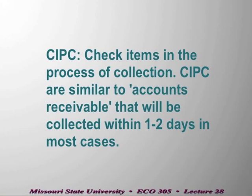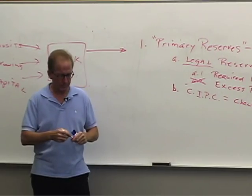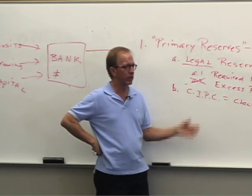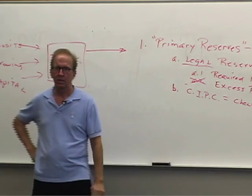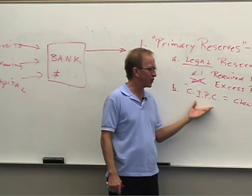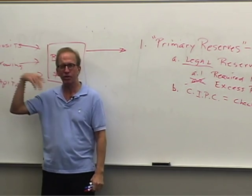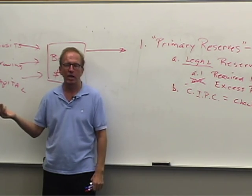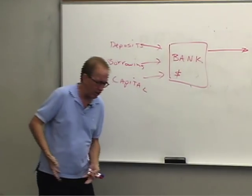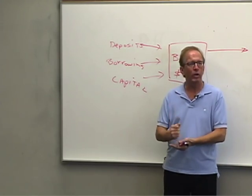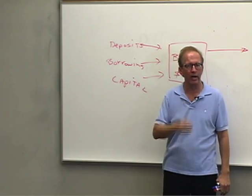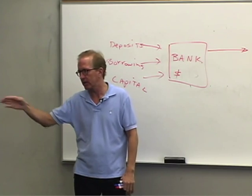The second component of primary reserves is CIPC — check items in the process of collection. They are liquid because they don't exist for very long. Here's what happens: somebody walks in and says, I've got a paycheck, I want to put this in my account — $1,000. We give them a deposit slip and they know they can get the money in a couple of days.